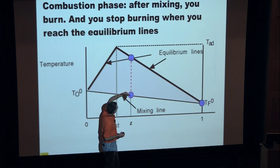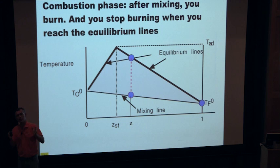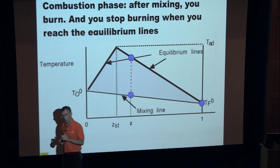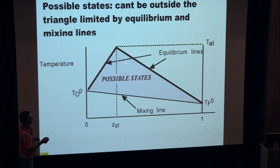The time it takes to go from mixing to burning is not infinitely small. If chemistry is fast, it is infinitely small; if chemistry is not infinitely fast, it takes a certain time. So if you sample the flow, you'll find points along this line. What that really means is that all points have to lie inside this triangle — this is what we call the possible state space. If you do a measurement or computation and plot the points in this diagram and find points outside the triangle, you're in trouble.